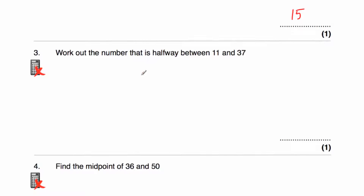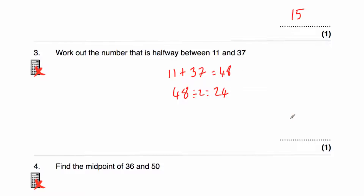Question three says: find the number that's halfway between 11 and 37. So 11 plus 37 is equal to 48, and then 48 divided by 2 is equal to 24. So the midpoint, the number halfway between 11 and 37, is 24.